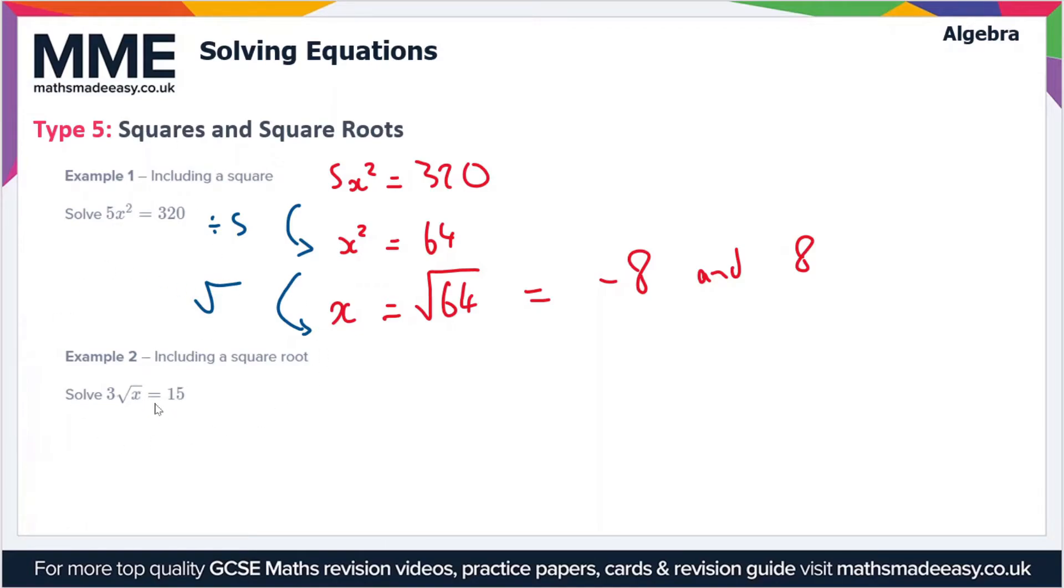Let's rewrite this: 3√x equals 15. Our first step is to divide both sides by 3 to get √x on its own. If we divide by 3, we get √x on the left-hand side.